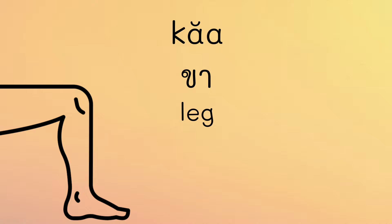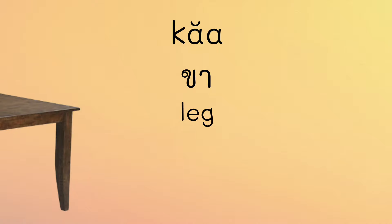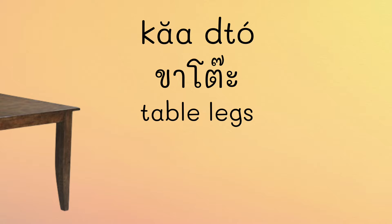ขา. Apart from referring to a physical leg, it can also indicate leg-like supports used for propping up objects. For example, ขาโต๊ะ — where โต๊ะ means table with a high tone. ขาโต๊ะ means table leg.